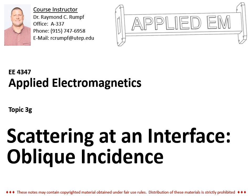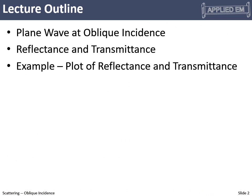Scattering at an interface: oblique incidence. This video mirrors the previous one. We'll set up our problem, look at an incident wave, and figure out how it reflects and transmits. The big difference is that the wave comes in at an angle, so polarization becomes important. We'll also discuss reflectance and transmittance — the fraction of power reflected and transmitted — and end with an example plotting these as a function of angle of incidence.